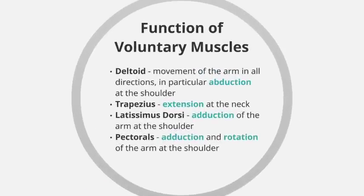Each particular muscle has its own individual function. The deltoid is located in the shoulder and regulates movement of the arm in all directions, but in particular abduction at the shoulder — abduction being when we take a limb away from the midline of the body. A good example would be lifting the arm up during a star jump.